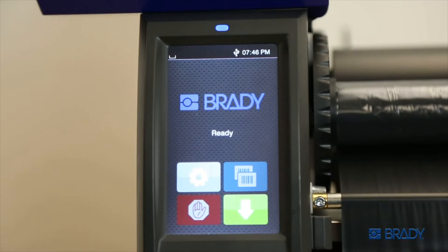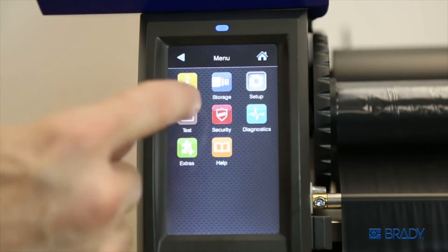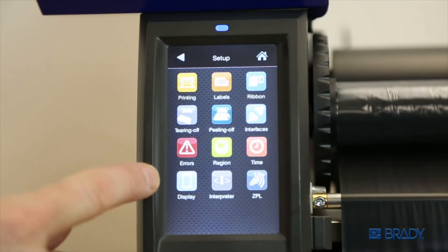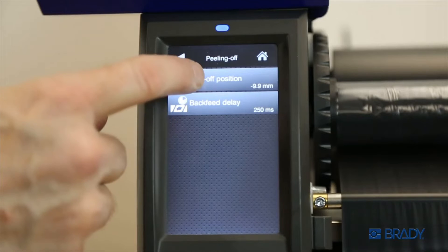You can also change the peel offset on the printer itself. Use the touchscreen interface to go into Settings, then Setup, then Peeling Off, and then you can adjust the peel-off position as necessary.